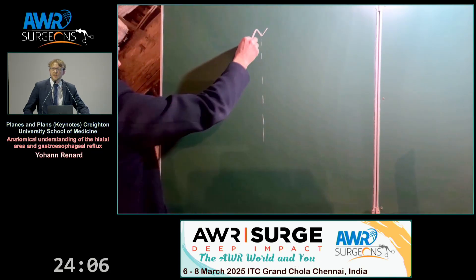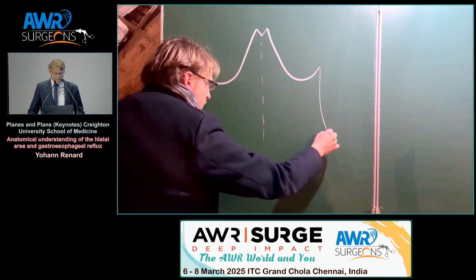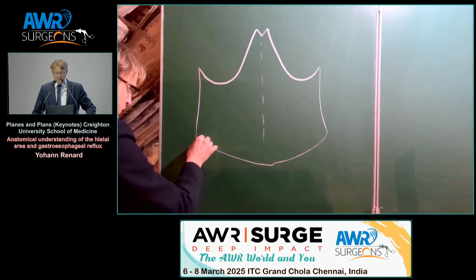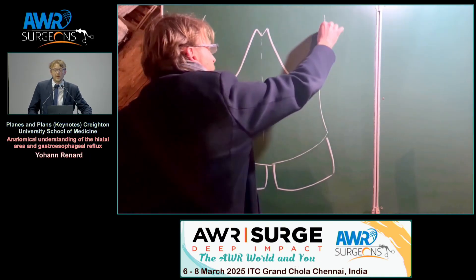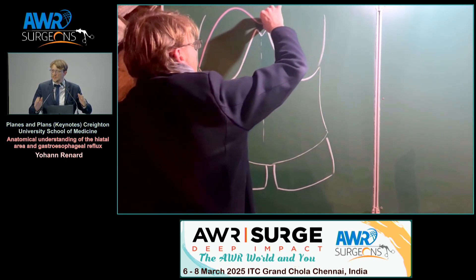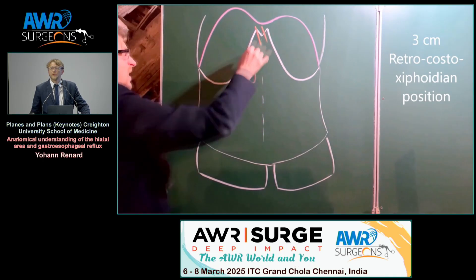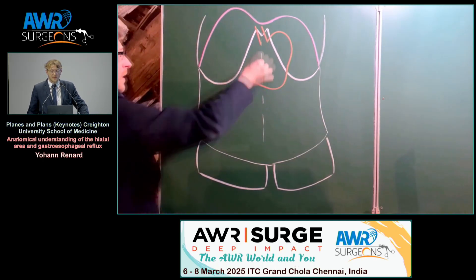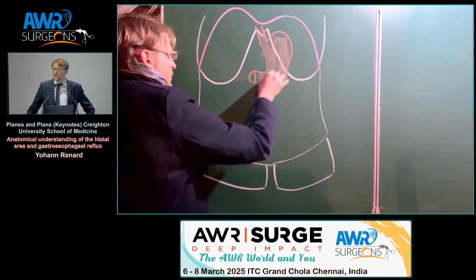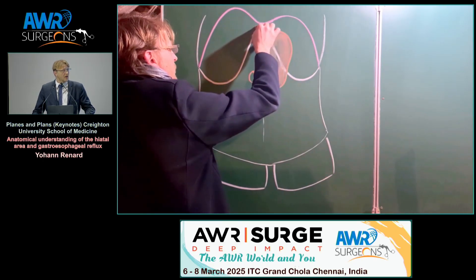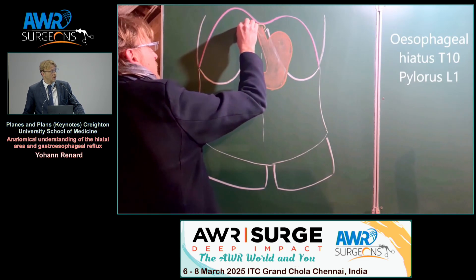This is an anterior view. You can see here the xiphoid process, the costal margin, the lateral edge of the abdomen, anterior and superior iliac spine, the inguinal ligament, and the thigh. We will draw the diaphragm, the esophagus — we can find three centimeters of esophagus inside the abdomen — and then the stomach until the pylorus. The esophageal hiatus projects at T10, the tenth thoracic vertebra, and the pylorus projects at L1, the first lumbar vertebra.